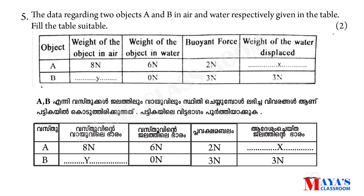Fifth question: the data regarding two objects A and B in air and water respectively are given in a table. Fill in the table suitably. The weight of the water displaced equals the buoyant force, so x equals x. Then b is equal to 0N, and the weight is 3N.